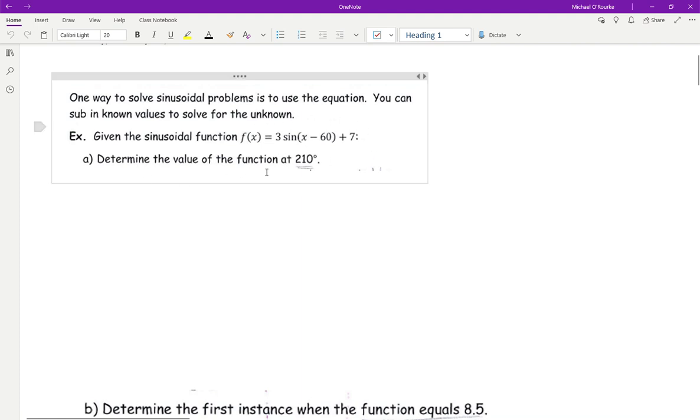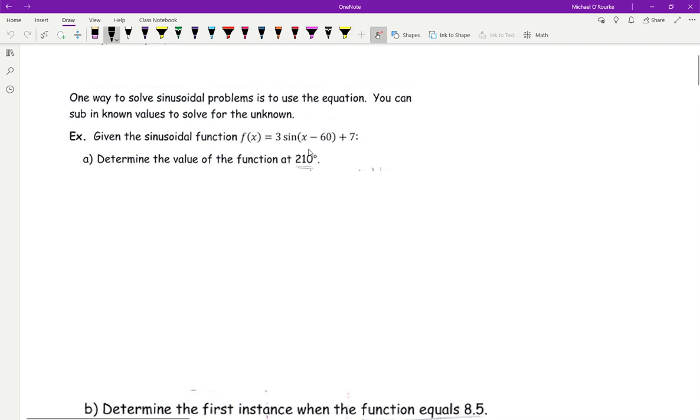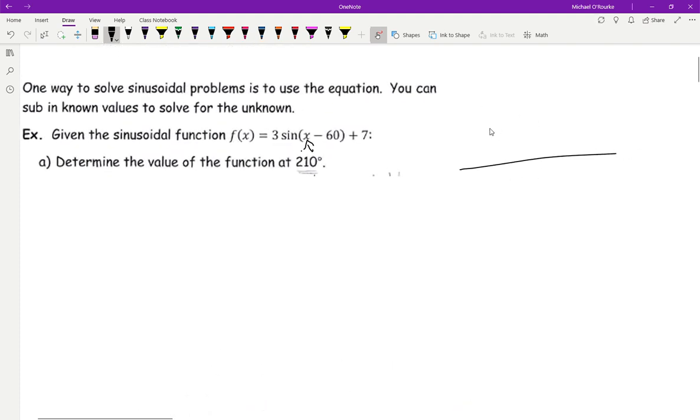Determine the value of the function at 210 degrees. So essentially that's saying 210 is my x. What's the value? Like if we were to graph this, what's my value at 210 degrees? To find that, all we're going to do is substitute that into the equation. So we get 3 sine bracket, and this is where the x was before, we put 210 in there.